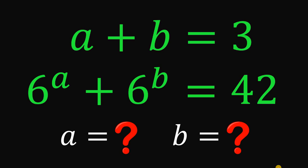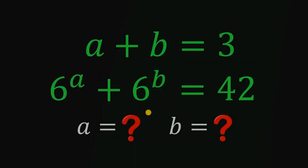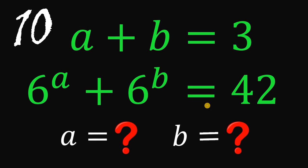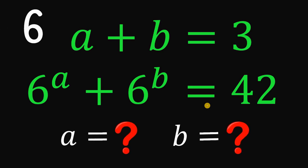For today's video, we will answer a math challenge given by one of our followers. The question goes like this: solve for the values of A and B, given A plus B equals 3, and 6 raised to the power of A plus 6 raised to the power of B equals 42. You can pause this video if you want to give this problem a try.